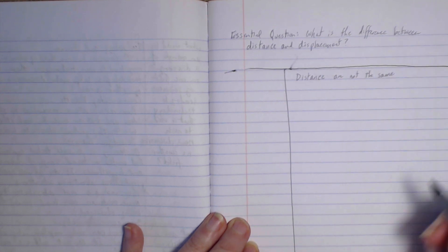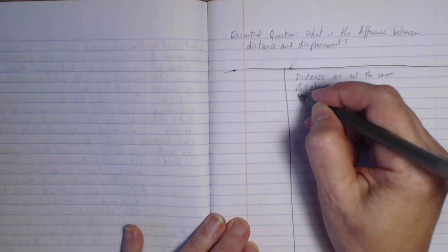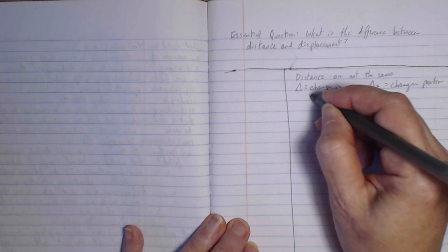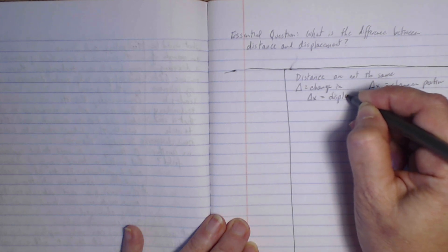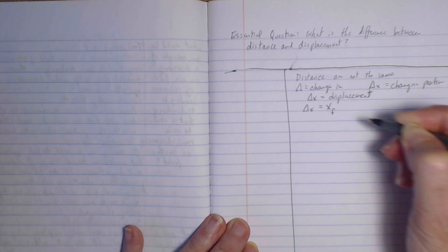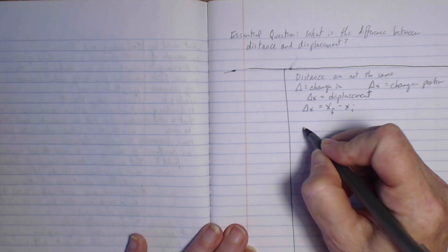I also learn a new term: delta means change in. Delta x means change in position. Delta x equals displacement. Delta x is also equal to x, my final position, minus my initial position.